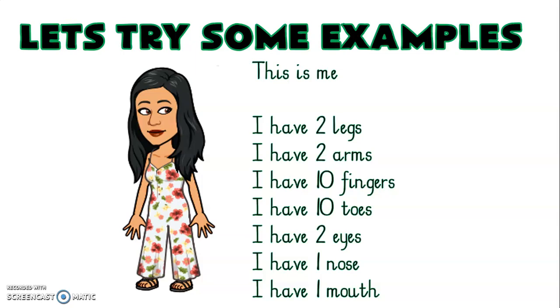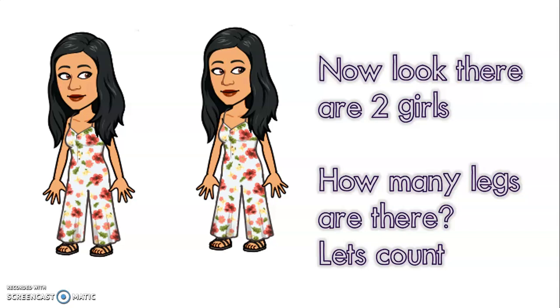Let's try some examples. This is me. I have two legs, I have two arms, I have ten fingers, I have ten toes, I have two eyes, I have one nose, I have one mouth.